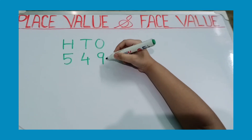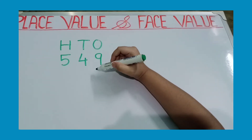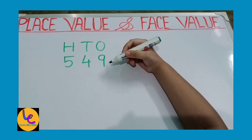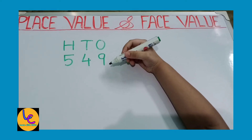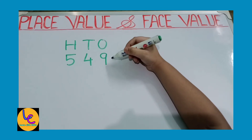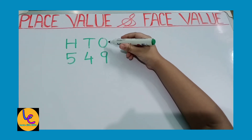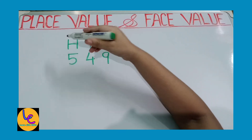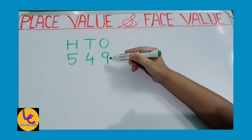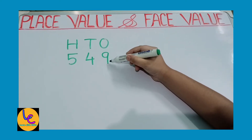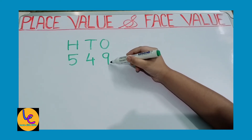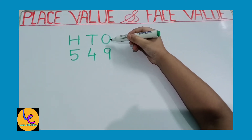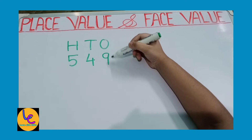Here we have the number 549. To find out place value, first we have to find out which place the digit is in. Here, 9 is in the 1's place, 4 is in the 10's place, and 5 is in the 100's place. So, to find out the place value of 9, we look at its place — the place is 1's. So, 9 ones is 9.